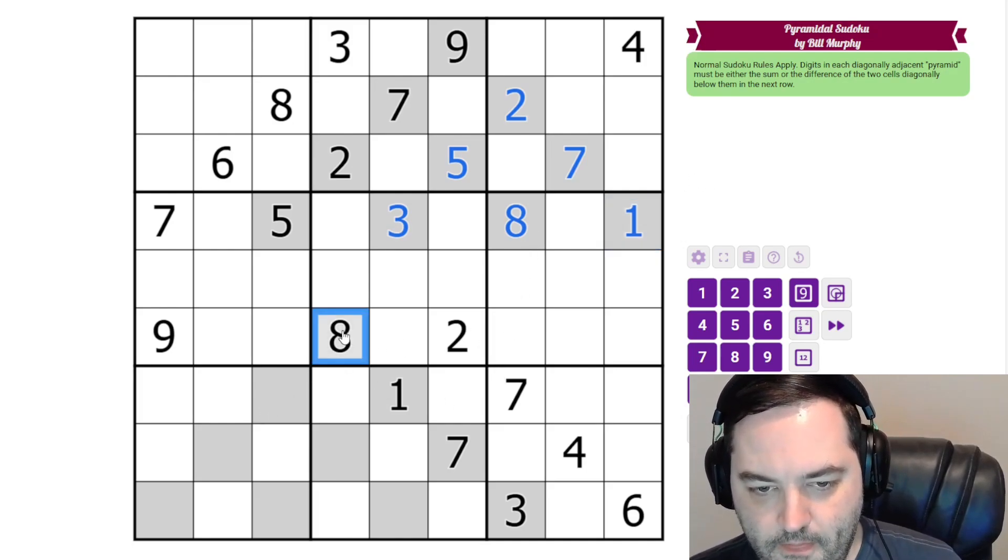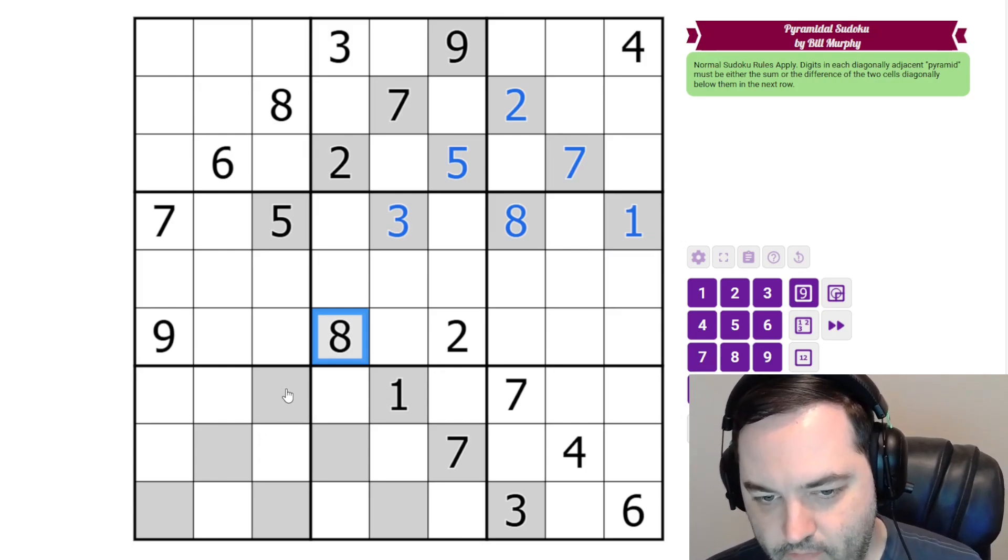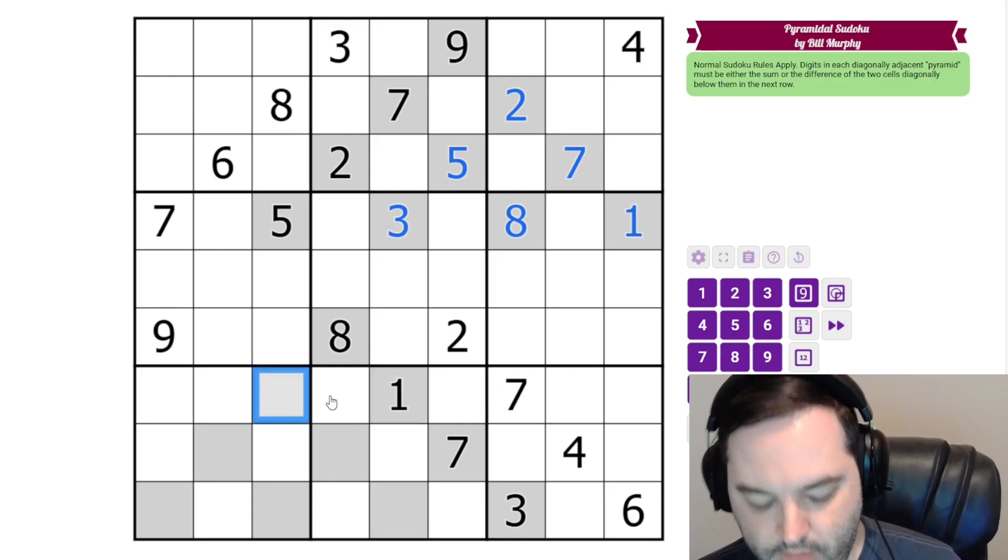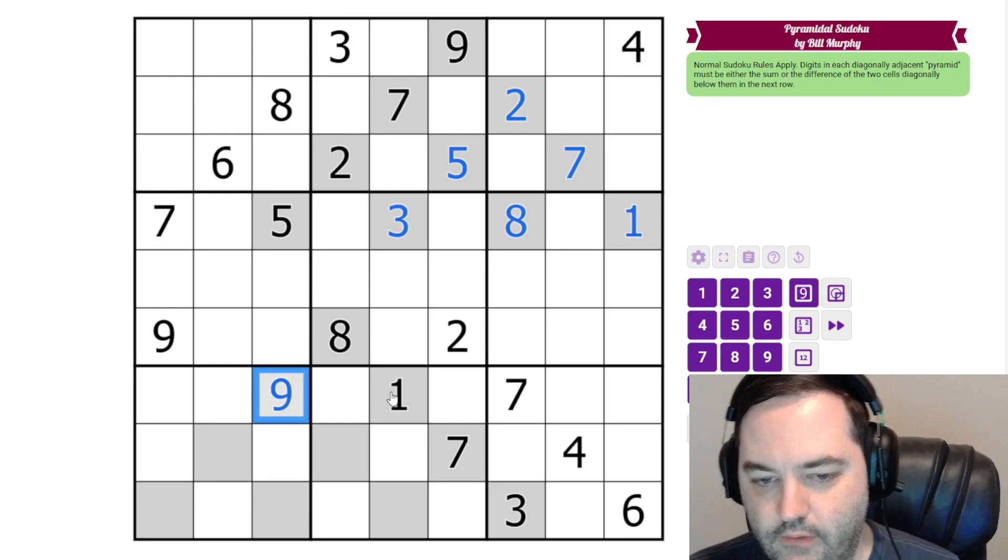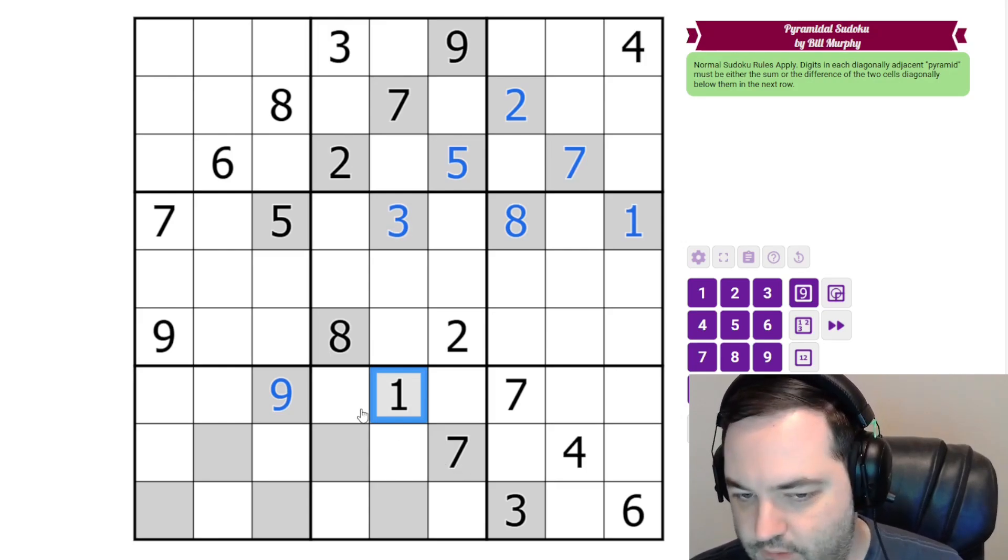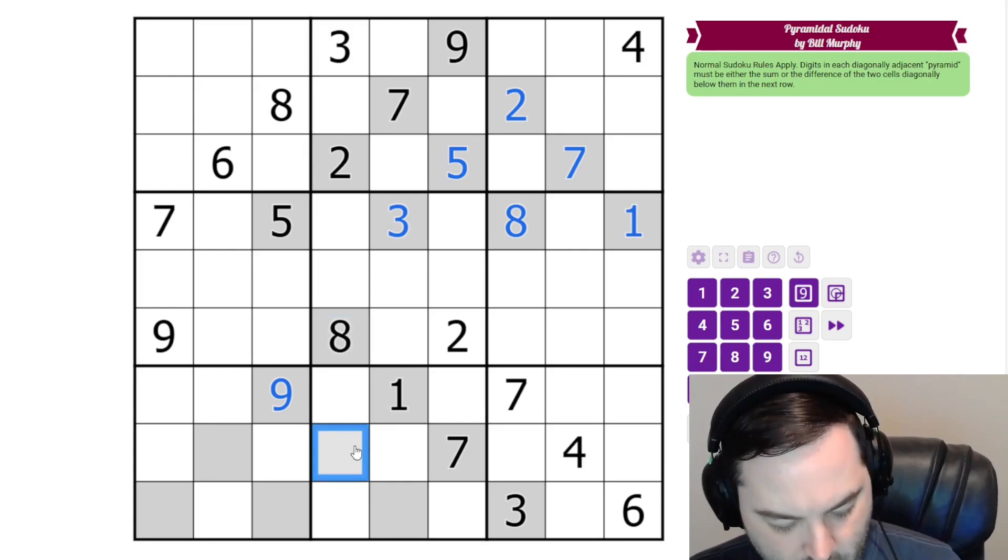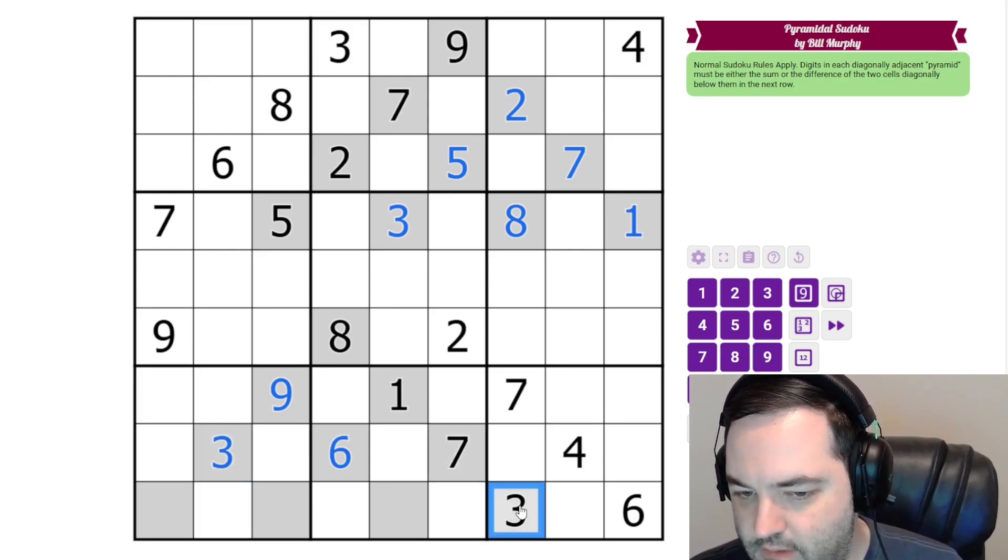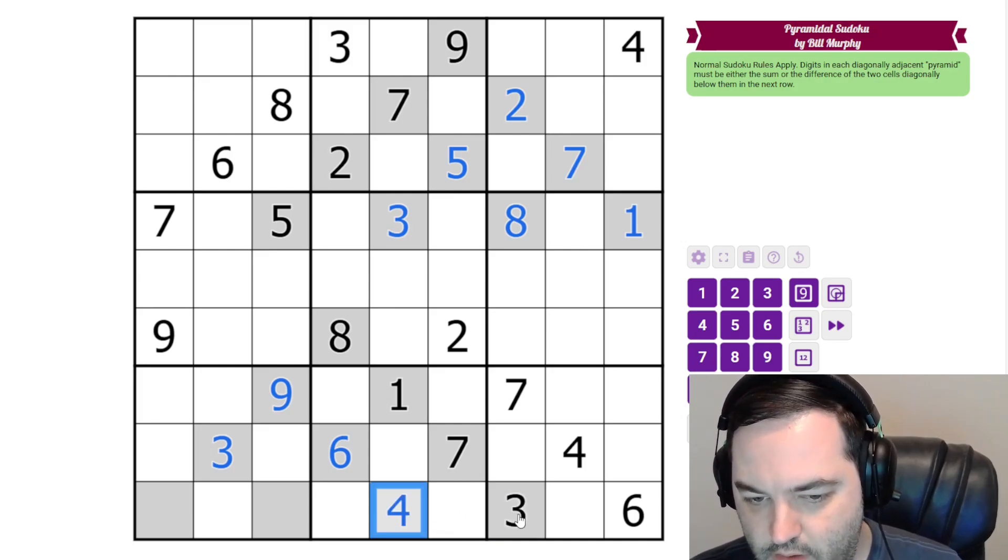Down here eight could be the sum or the difference but if it were the sum we would need a seven here to go with the one and we have a seven in the row. So instead it's the difference and the only way to make a difference in eight in Sudoku is nine minus one. The one could be seven minus six or it could be eight minus seven but we have an eight here so this is six. The nine again has to be a sum so this is three. Seven can't be a difference now because we would need ten or minus four. Either of those are not valid in Sudoku so this is a sum. We need a four.